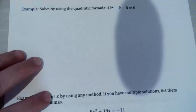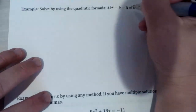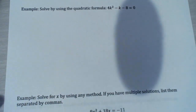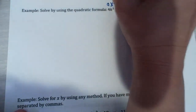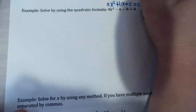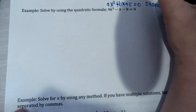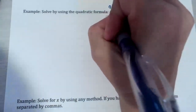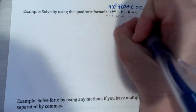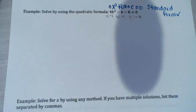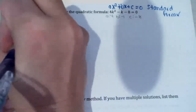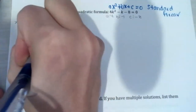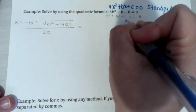Next example: solve by using the quadratic formula — 4k squared minus k minus 8 equals 0. This is already in standard form. So a in front of k squared is positive 4, b in front of k is negative 1, and c by itself is negative 8. Wherever I see an a I'll plug in 4, wherever I see a b I'll plug in negative 1, wherever I see a c I'll plug in negative 8.